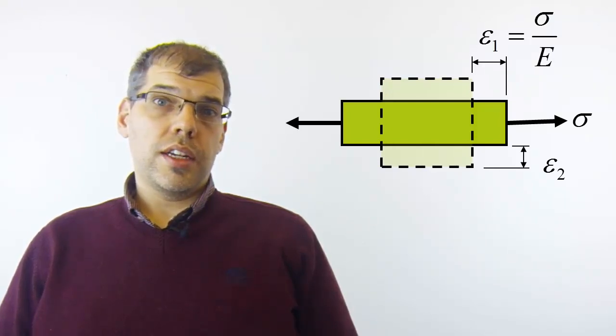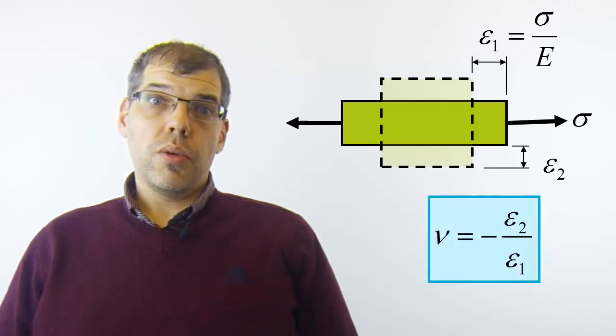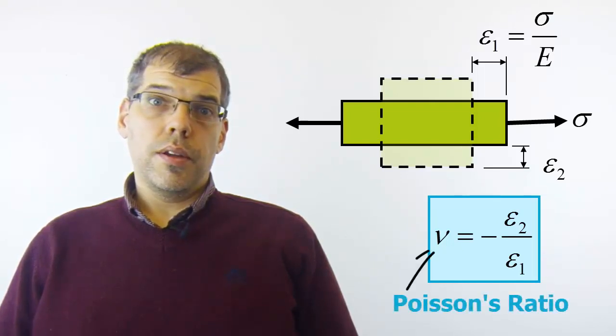Observations have shown us that if we take the ratio of transverse strain to strain in the loading direction, we get a constant, which we will call the Poisson's ratio. This ratio can be used to calculate the transverse strain given a normal stress in a loading direction.